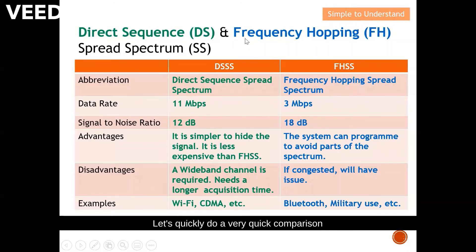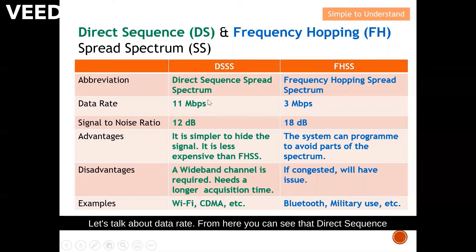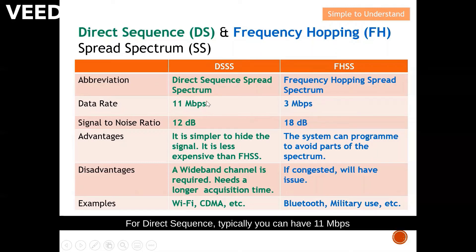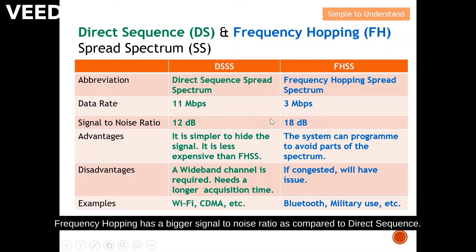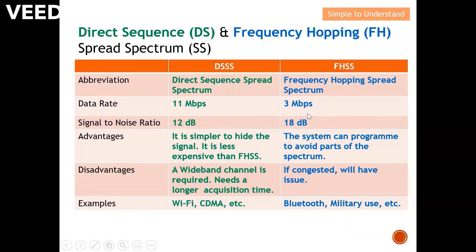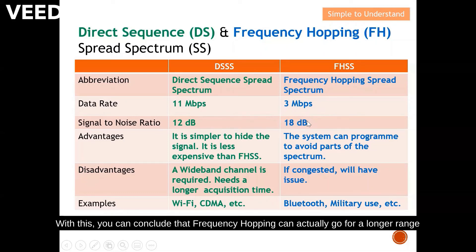Let's do a quick comparison between direct sequence and frequency hopping spread spectrum. In terms of data rate, direct sequence has a better data rate — typically up to 11 megabits per second — compared to frequency hopping which is typically 3 megabits per second. For signal-to-noise ratio, frequency hopping has a bigger SNR compared to direct sequence, which means frequency hopping can cover a longer range because the signal strength is much larger relative to the noise.